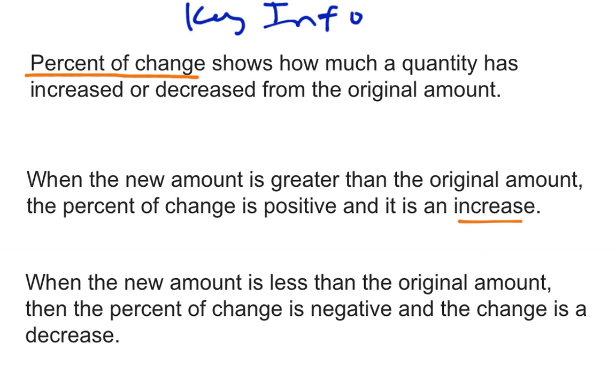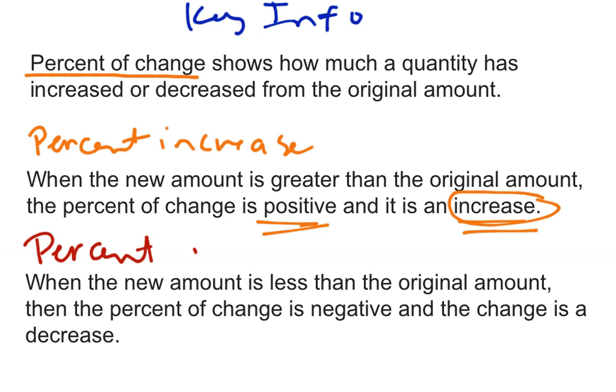You might be able to hear the weed whacker outside. I'm in my classroom recording. They are doing lawn maintenance on this rainy day. So the two types would be an increase, a percent increase. Percent increase is when the new amount is greater than the original amount. So you have an original amount, something changed, it went up, it's bigger now. That is considered an increase. And the change is a positive number. Then we have the opposite of that, which is a percent decrease. That's when the new amount is less than the original amount. The percent of change is negative, and it's considered a decrease.